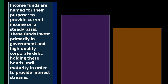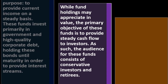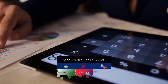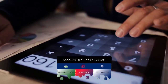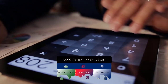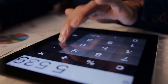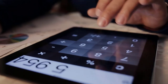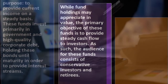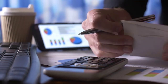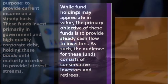Income funds are named for their purpose: to provide current income on a steady basis. These funds invest primarily in government and high-quality corporate debt, holding bonds until maturity in order to provide interest streams. This is typically more relevant later in life — at retirement — when you're living off your investments. You want income from your money, so you can't invest it all in growth stocks that reinvest earnings back into the company and increase share price rather than paying dividends.